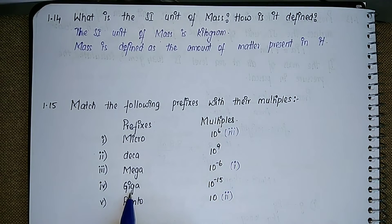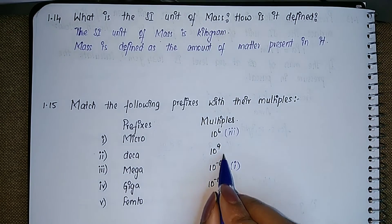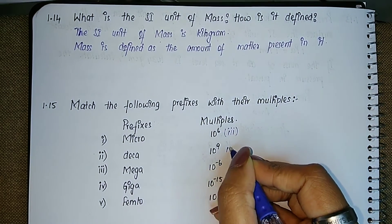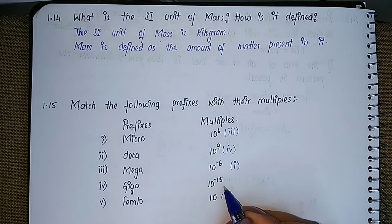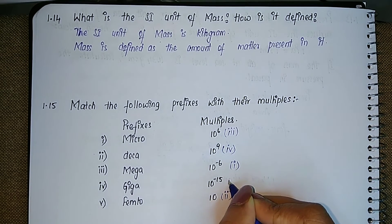Giga is going to be 10 to the power 9, so that is the fourth one. And femto is going to be 10 to the power minus 15, and that is the fifth one.